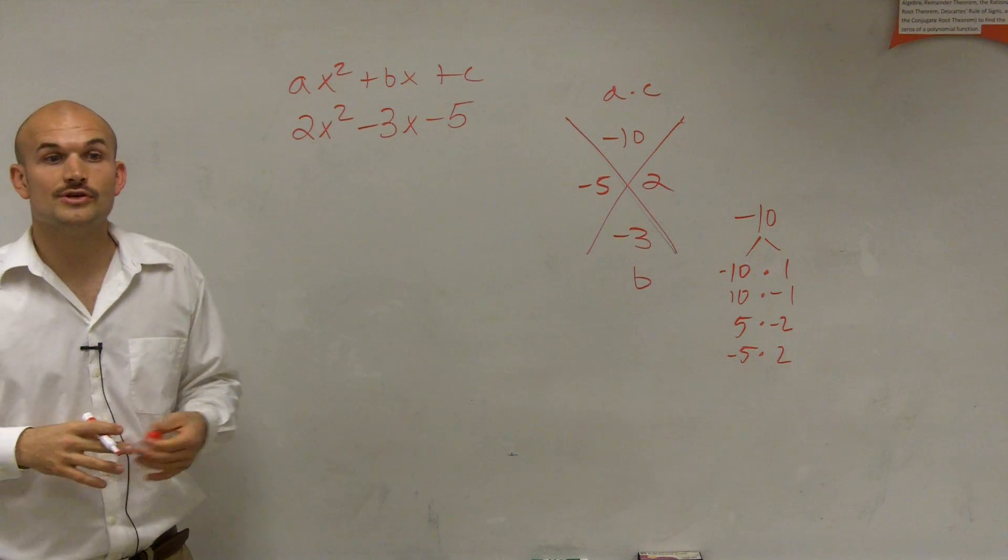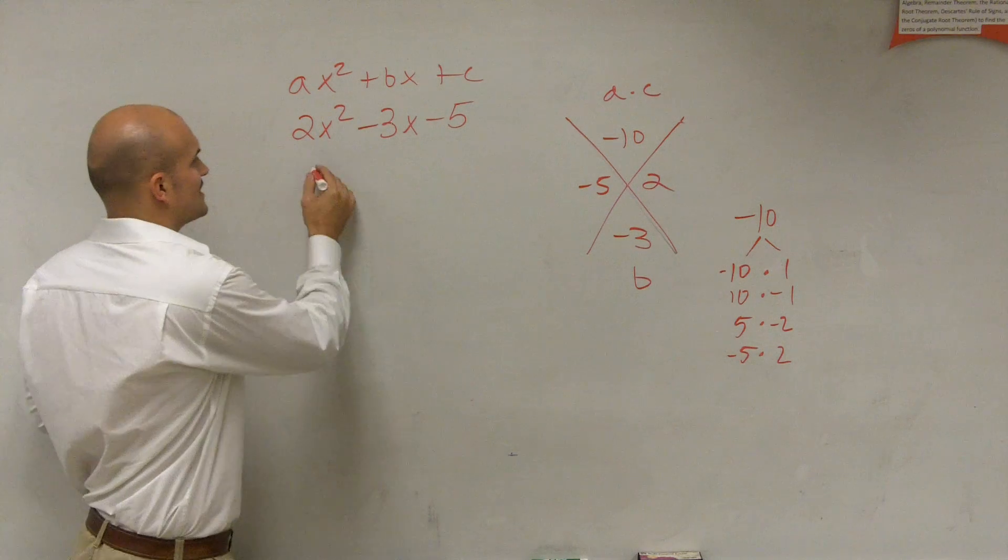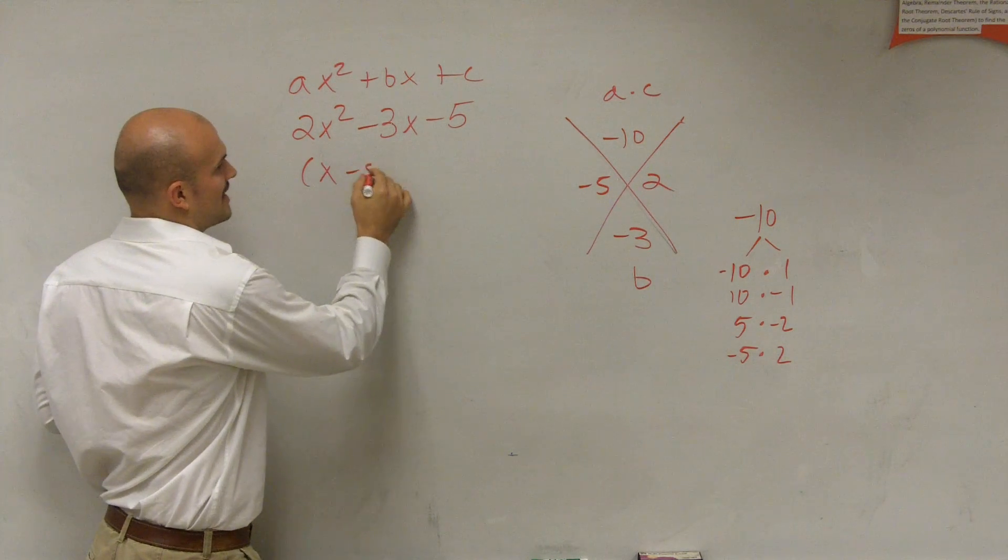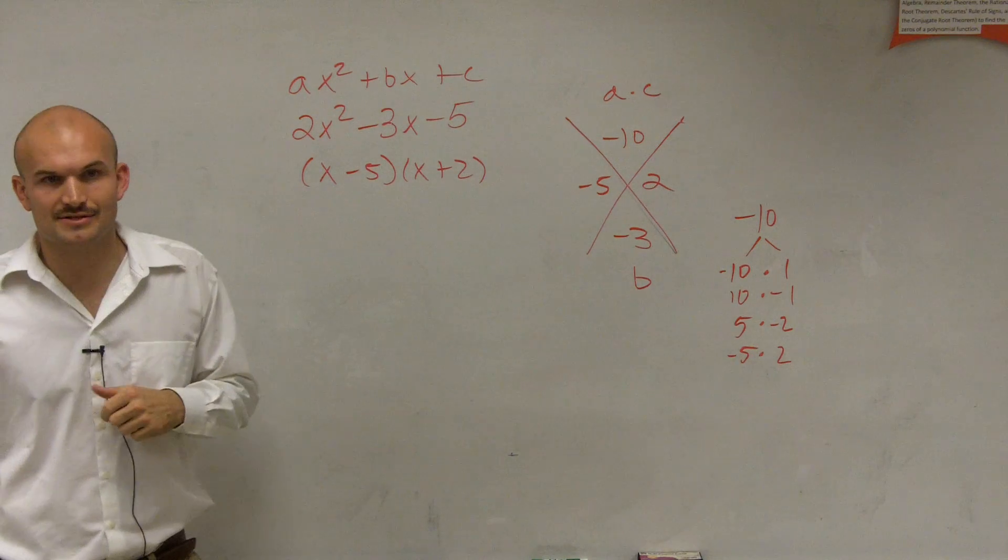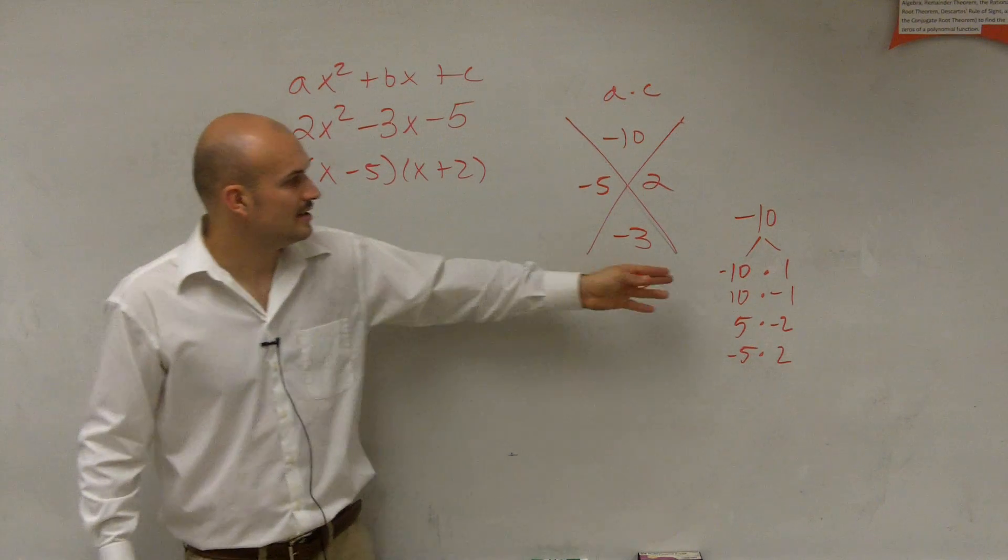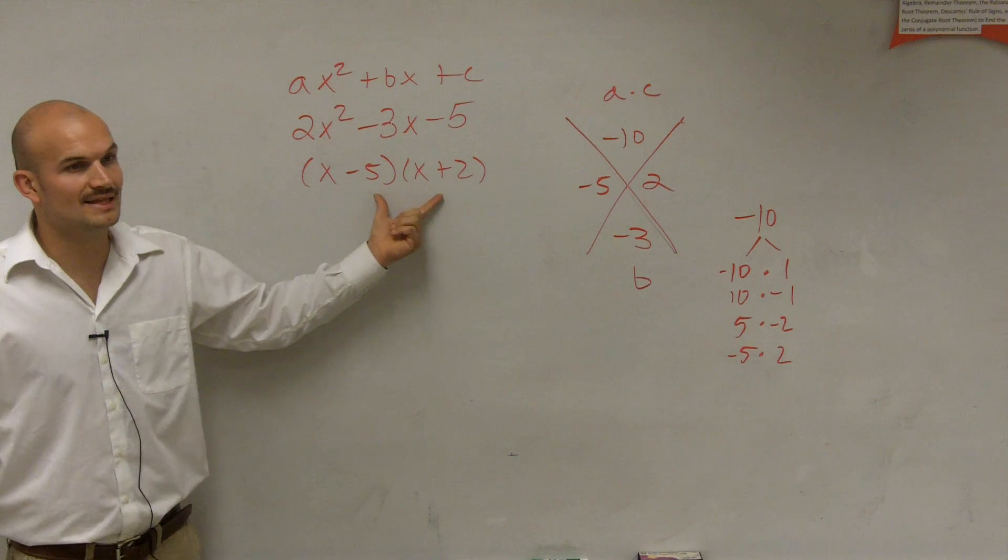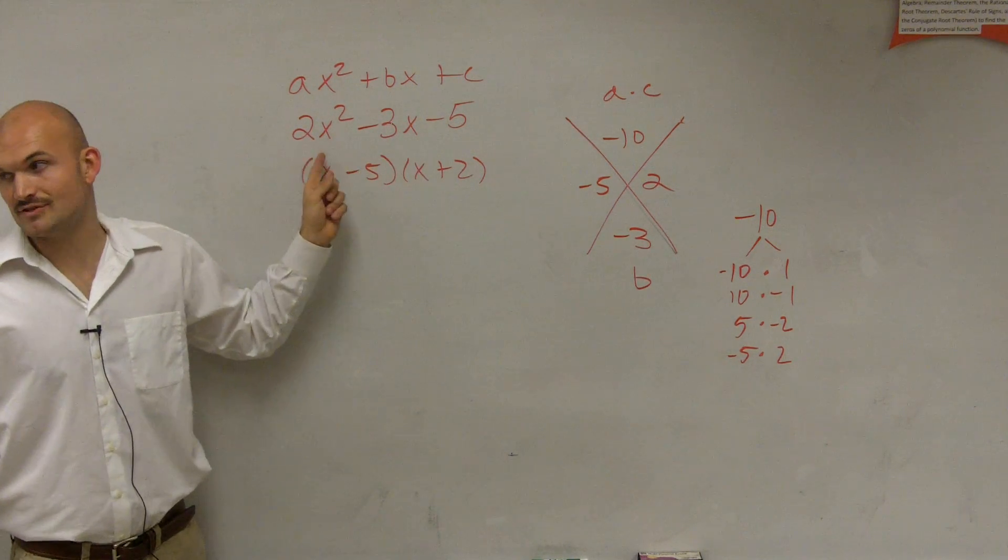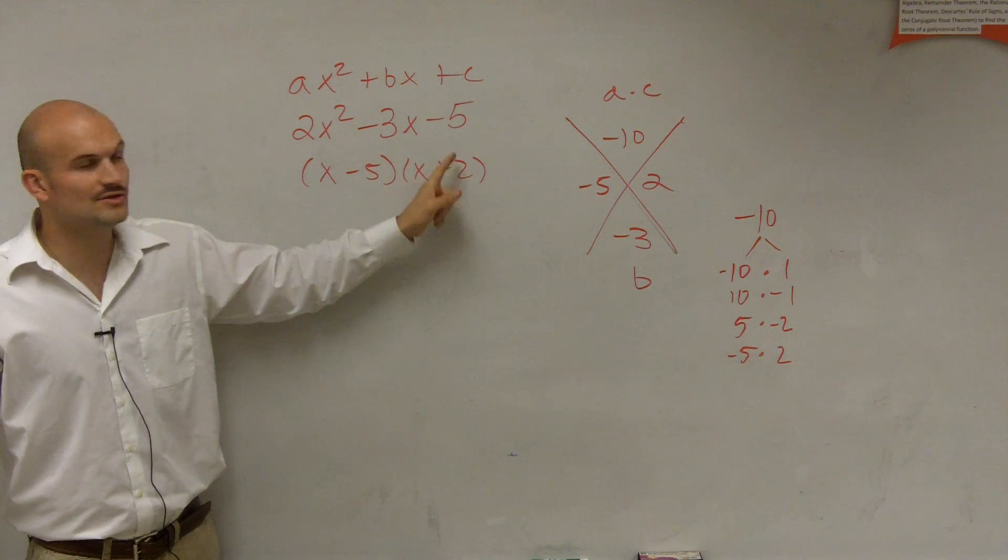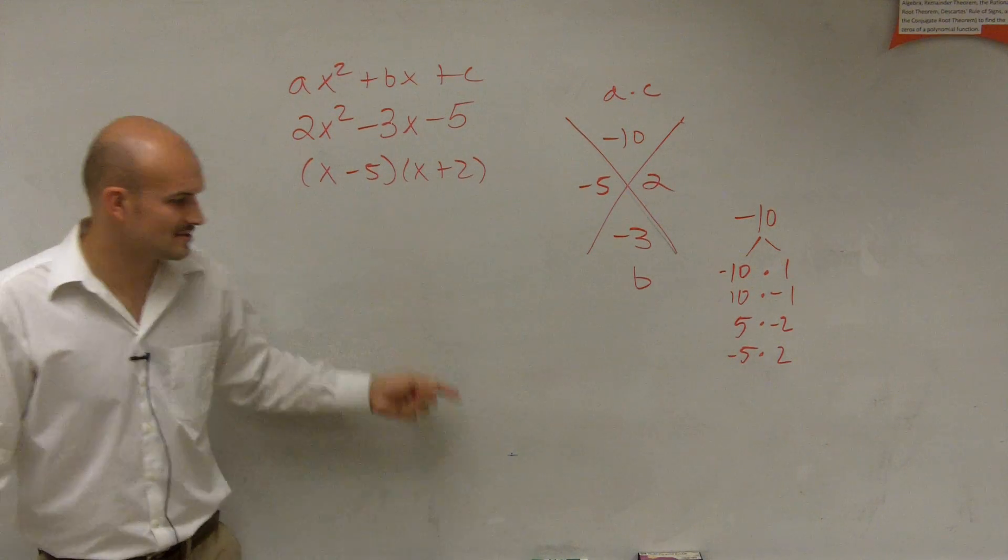So you think, oh, we got our two factors, right? Almost. You can't say that x minus 5 times x plus 2 is a product of the two factors. Because remember that your factors multiply to give you your number. So when I multiply these out by using FOIL, am I going to get this answer? No, x times x does not give us 2x squared. Negative 5 times 2 does not give us negative 5. So these are not the factors.